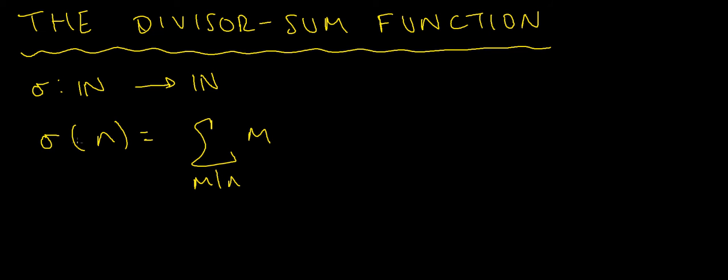If n is a natural number, then sigma of n, the divisor-sum function, is the sum of all the positive divisors m of our number n. That's why m appears in the summation and m appears here. Every time we find a divisor, we add that to the sum.